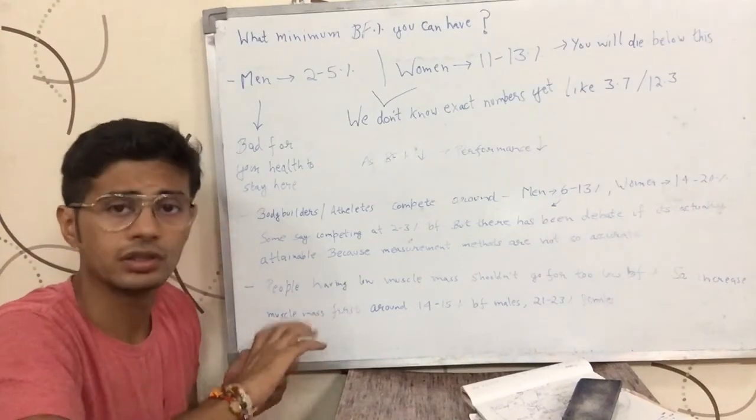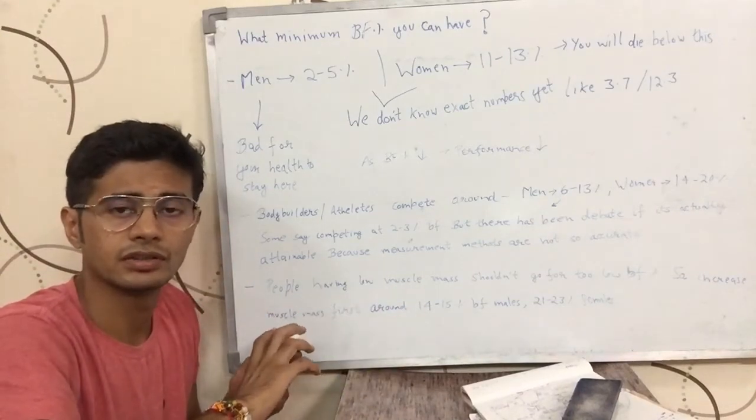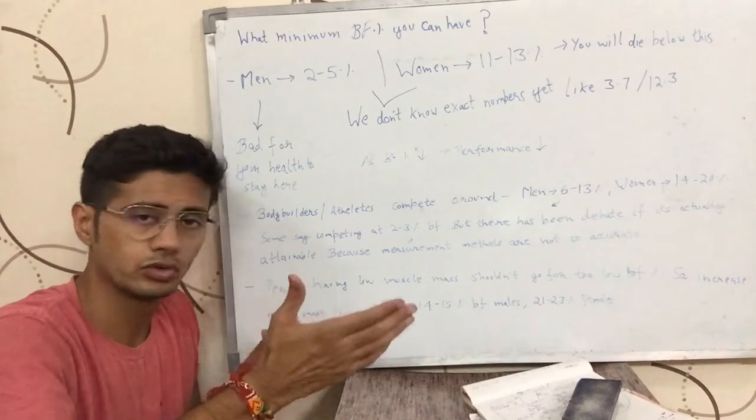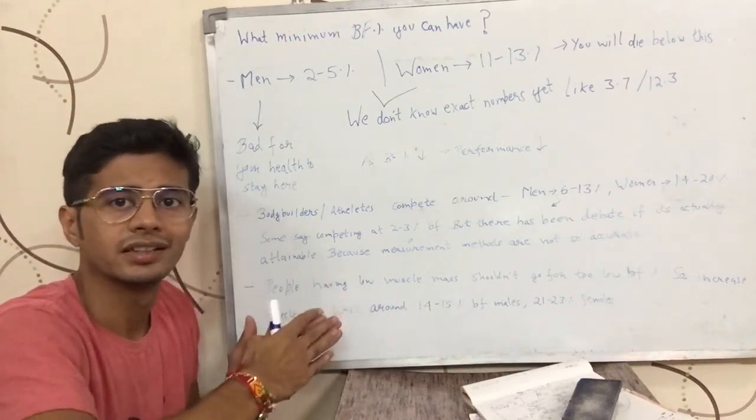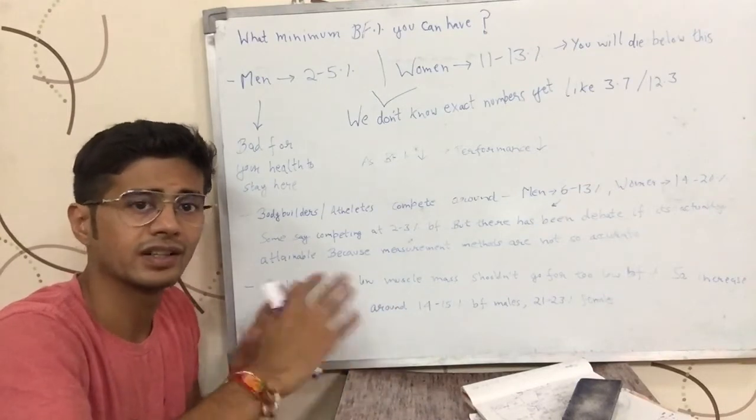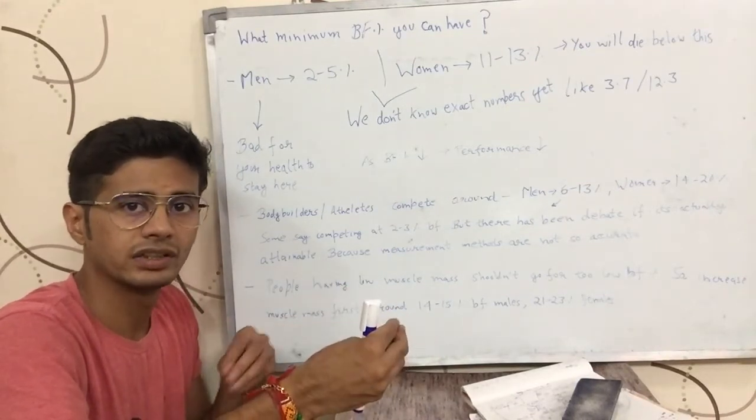For example, if you're really obese like 30%, 35%, 40%, or 50% body fat, you should lose the body fat. Come down to a range of around - I'm talking about males first - 13, 14, 15, 16, 17% body fat, then increase the muscle mass. You would gain some fat along with it.